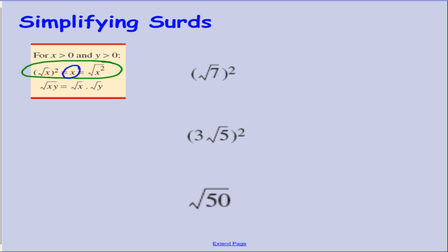The other surd definition that we need to be able to use is the fact that if you have one number multiplied by another number under the surd sign, you can split those up. For our first example we are going to try and simplify the square root of 7 squared. According to our definition here, if you square root a number and square it, nothing happens essentially and you're left with the number that you started with.